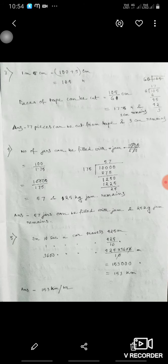Now 1 meter 5 centimeter, 100 plus 5 centimeter. The pieces of tape can be cut means 105 divided by 6, that is 17 with 3 remaining. The 17 pieces cut from tape and 3 centimeter is remaining.